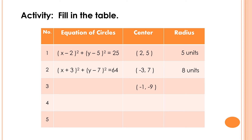Next, number 3: the center of the circle is (negative 1, negative 9) and the radius of the circle is 2 square root of 5 units. The value of h is negative 1, the value of k is negative 9, the value of r is 2 square root of 5. So the equation is the quantity of x plus 1 squared plus the quantity of y plus 9 squared is equal to 20. We get 20 because: 2 squared is 4, and square root of 5 times square root of 5 is 5, so 4 times 5 is equal to 20.